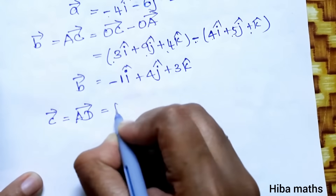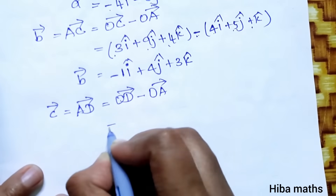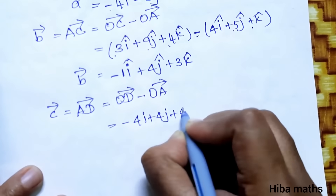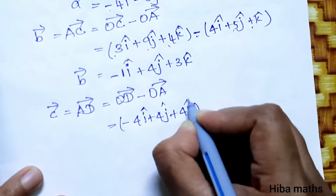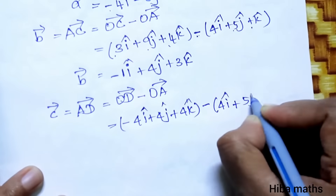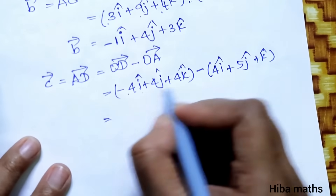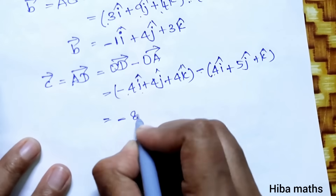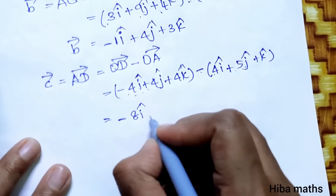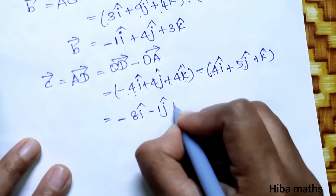AD vector = OD vector minus OA vector. OD = -4i + 4j + 4k, minus OA = 4i + 5j + k. So AD = (-4-4)i + (4-5)j + (4-1)k = -8i - j + 3k. This is the AD vector.